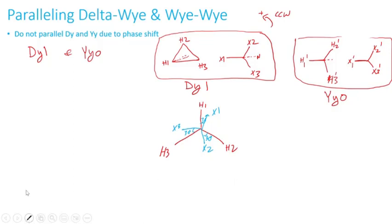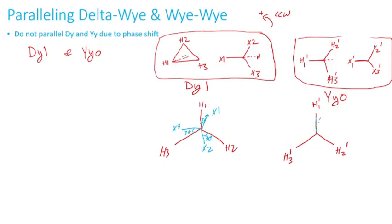Now let's do the same for the yy transformer. I'll draw the high side: H1 prime, H2 prime, H3 prime. Since there is no phase shift, X1 prime aligns with H1 prime, X2 prime and X3 prime are in parallel with the high side. For clarity I'm using arrows — the phase shift is zero, so the phasors are exactly in parallel.